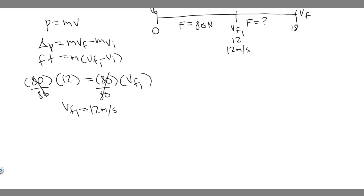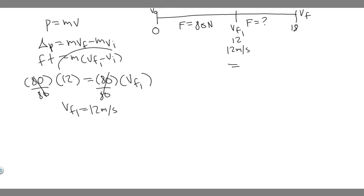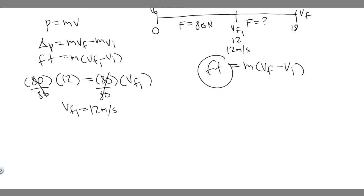Now for the second interval, we do the same thing except the force is not constant. We still use m times (v final minus v initial), where v initial is now 12 meters per second. But since the force isn't constant, instead of F·t we use the integral of the force function times dt — so the integral of f dt. The force is a function we have to solve for.